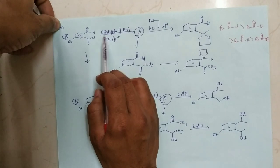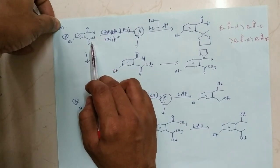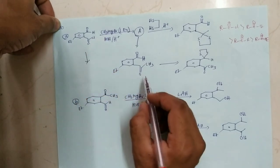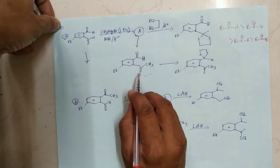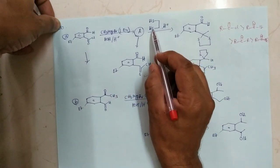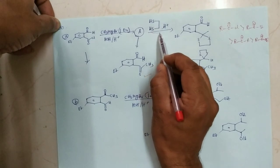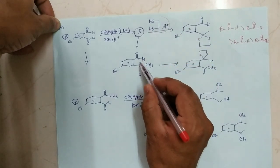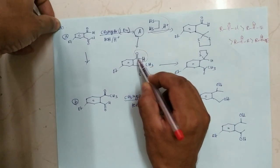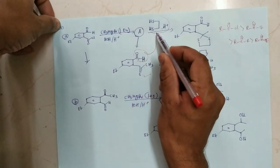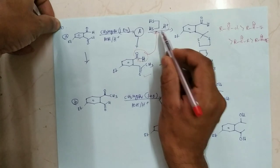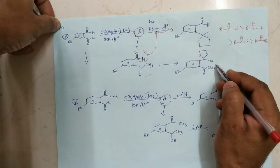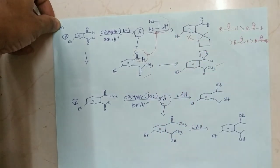In the first option, one equivalent of methyl magnesium bromide attacks the acyl halide, and we get this product. Now this product reacts with thio glycol. Between aldehyde and ketone, aldehyde is more reactive, so the aldehyde group is attacked by the thio glycol. This is the correct product, but the given product in the option is incorrect.